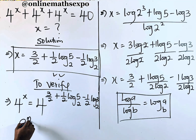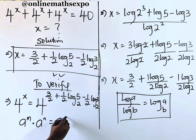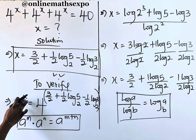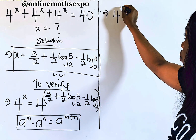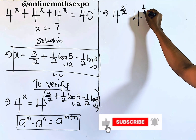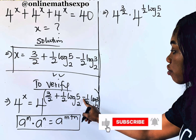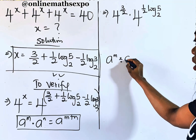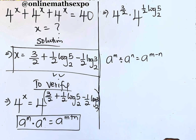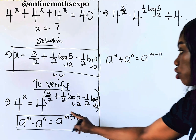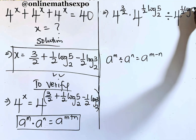Remember, for every a to the power of m multiplied by a to the power of n, it is always equal to a to the power of m plus n — addition in the exponent means multiplication of the bases. We apply this rule on our x value. So we have 4 to the power of 3 over 2, multiplied by 4 to the power of one-half log 5 base 2. And for the subtraction, remember a to the power of m divided by a to the power of n gives a to the power of m minus n — subtraction means division. So we divide by 4 to the power of one-half log 3 base 2.